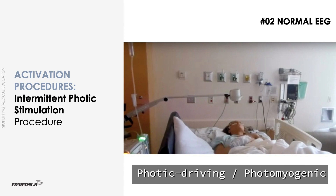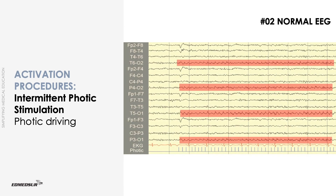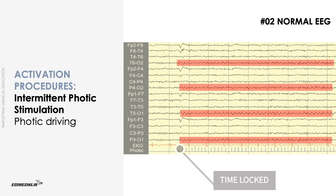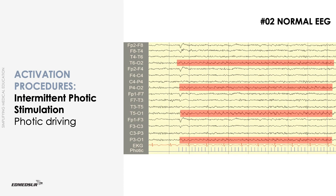When background changes are noted, they are categorized as photic driving, photomyogenic, and photoparoxysmal. Photic driving response consists of rhythmic activity in the parieto-occipital region. It is time-locked to the stimulus and represents visual evoked potentials produced by each flash of light. Evoked potentials are neuroelectric responses to sensory stimuli that can be recorded from the scalp using averaging techniques.